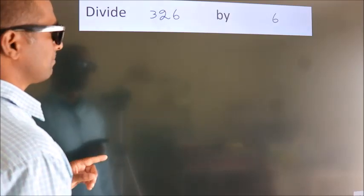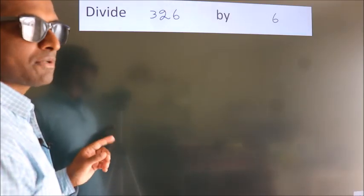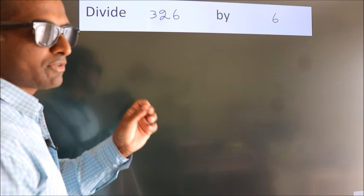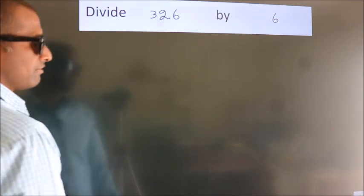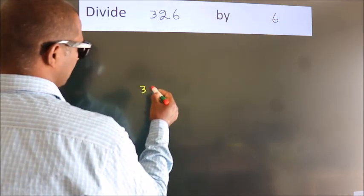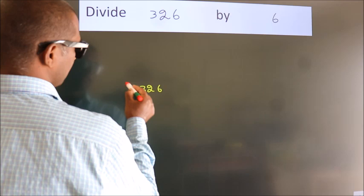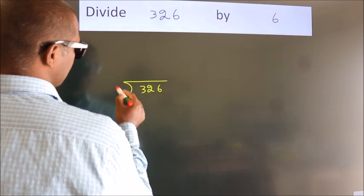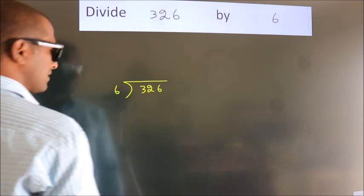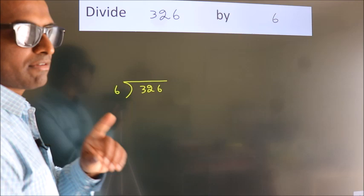Divide 326 by 6. To do this division, we should frame it in this way. 326 here, 6 here. This is your step 1.